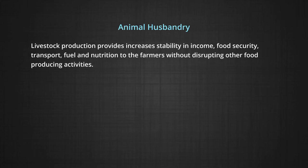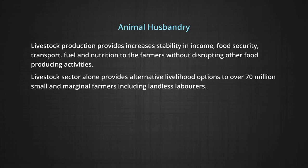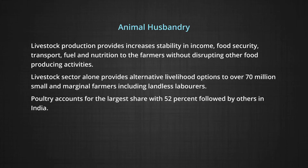Animal husbandry is another important area. In India, the farming community uses the mixed crop-livestock farming system. Cattle, goats, and fowl are widely held species. Livestock production provides increased stability in income, food security, transport, fuel, and nutrition to farmers without disrupting other food-producing activities. The livestock sector alone provides alternative livelihood options to over 70 million small and marginal farmers including landless laborers. Poultry accounts for the largest share at 52% in India.